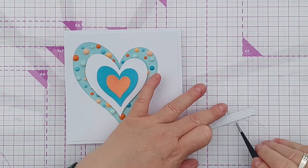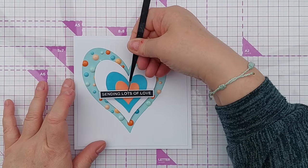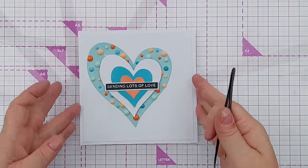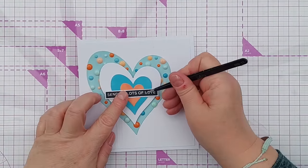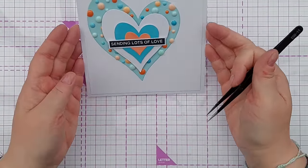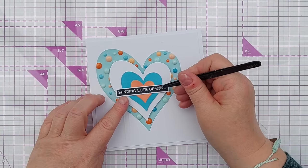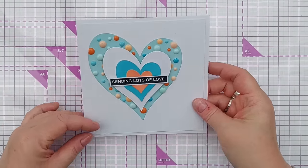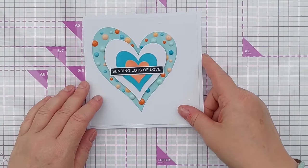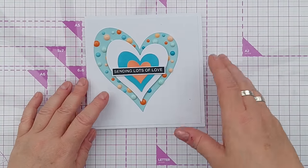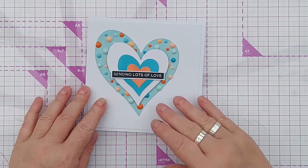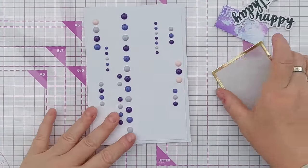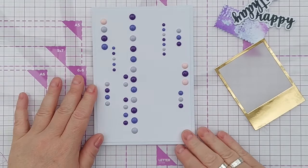Card number two is even easier. I think it's pretty much a complete card as it is—it just needs a sentiment. And as we've got hearts, I've chosen this Sending Lots of Love sentiment. Again that's just pre-stamped and pre-cut. I had a bit of a stamping and cutting session last night so I'm now well stocked for pre-stamped, pre-cut sentiments. So I think that's finished—I don't think it needs anything else now.